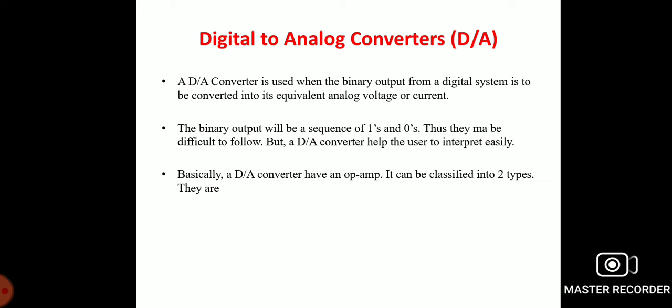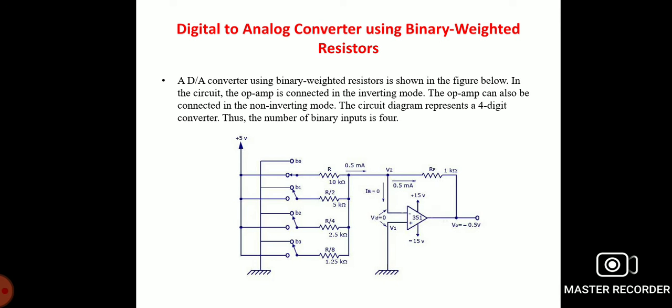Basically, a DAC uses an operational amplifier and can be classified into two types: a DAC using binary weighted resistance and a DAC using binary weighted capacitance. Now we move to the DAC using binary weighted resistance. In this circuit, the operational amplifier is connected in the inverting mode, though it can also be connected in non-inverting mode.